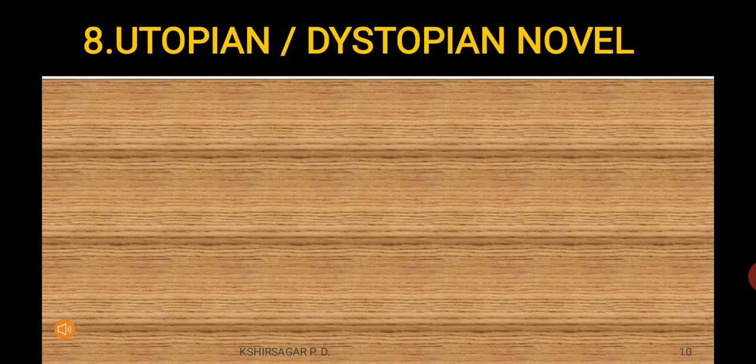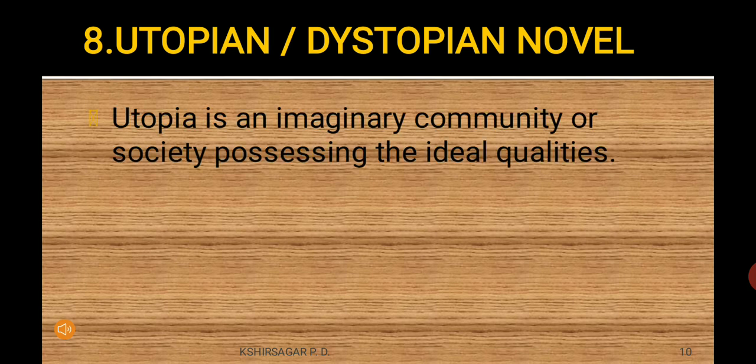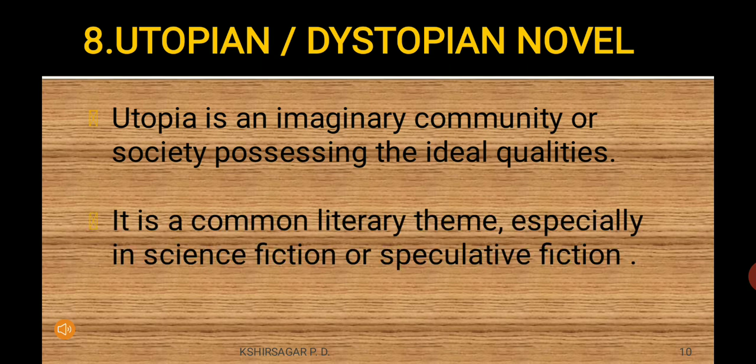Next is the utopian or dystopian novel. An utopia is an imaginary community or society possessing ideal qualities. It is a common literary theme, especially in science fiction or speculative fiction.